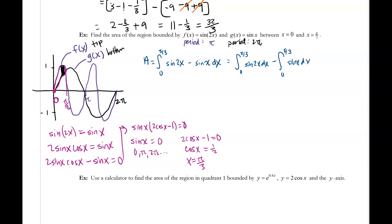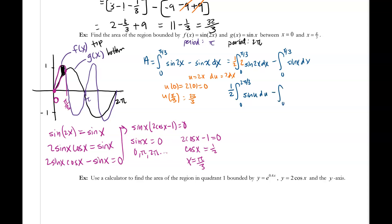We need to do a u-substitution for the first integral. Let u equal 2x, so du equals 2 dx. To get a 2 dx, I need another 2 here, which means a one-half out in front. Changing the limits of integration: u of 0 is 2 times 0, which is 0, and u of pi over 3 is 2 times pi over 3, which is 2 pi over 3. So the first integral becomes one-half from 0 to 2 pi over 3 of sine of u du. The second integral does not need a u-substitution.